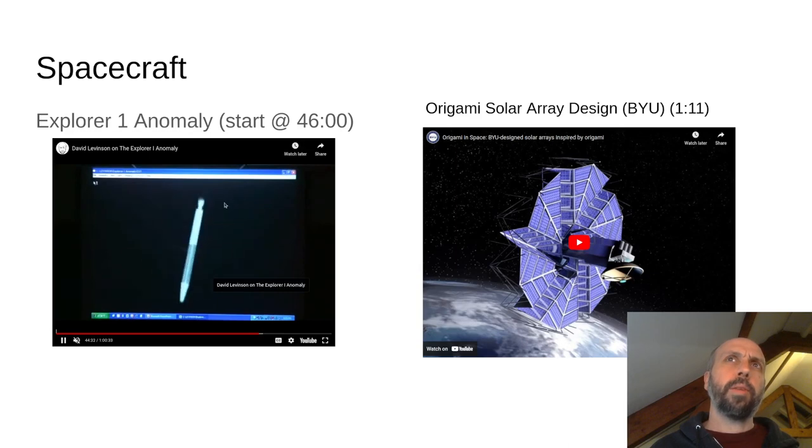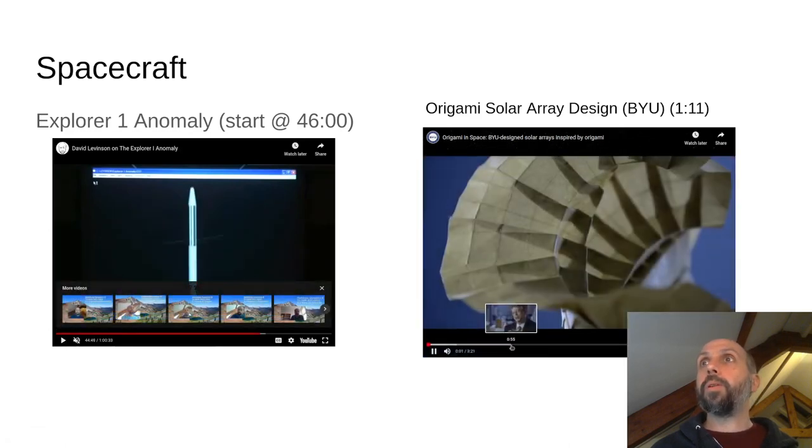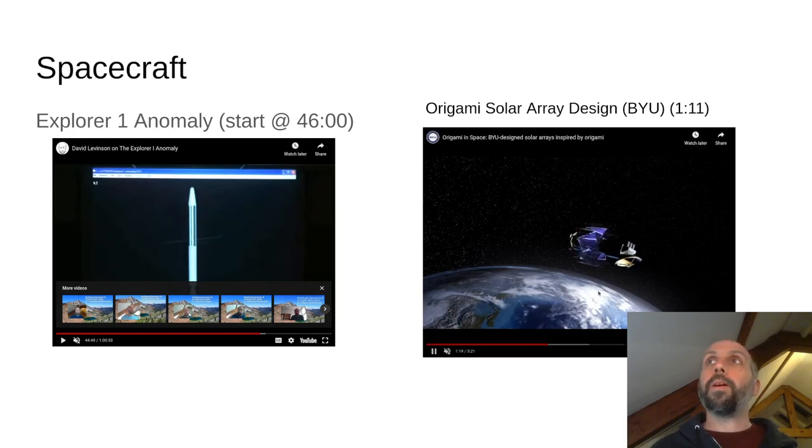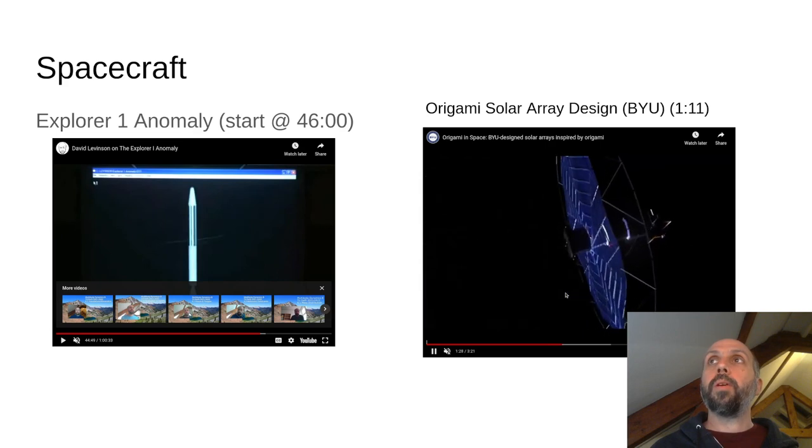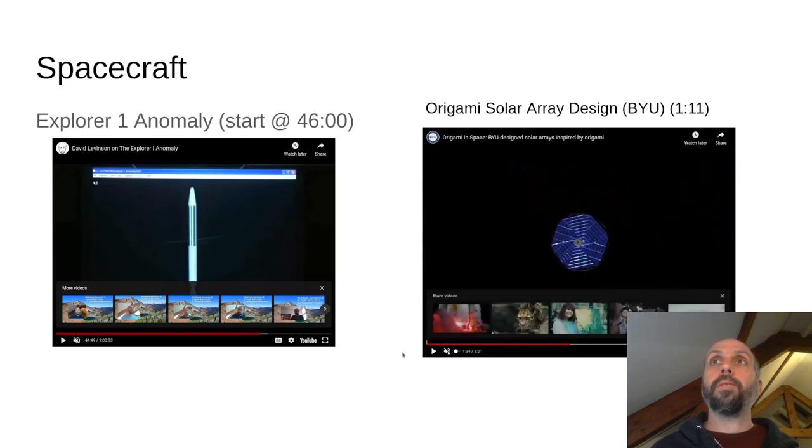And some of the basic principles that you'll learn in this class can help understand why that might have happened. You can't see it very well, but there's like these antenna elements that came out of the side of the craft causing a change in the principal axes of the vehicle, ultimately making it destabilize, which is not good. This is an example of a sort of origami spacecraft solar panel deployment.